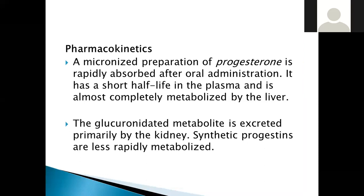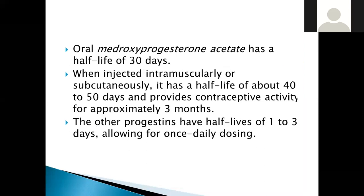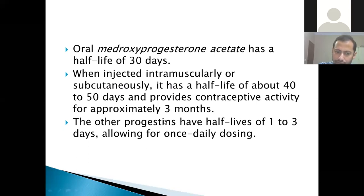A micronized preparation of progesterone is rapidly absorbed after oral administration but has a short half-life in the plasma and is almost completely metabolized by the liver. The glucuronidated metabolite is excreted primarily by the kidney. Synthetic progestins are less rapidly metabolized: oral medroxyprogesterone acetate has a half-life of 30 days, and when injected IM or subcutaneously it has a half-life of about 40 to 50 days. Other progestins have a half-life of 1 to 3 days, allowing for once-daily dosing.